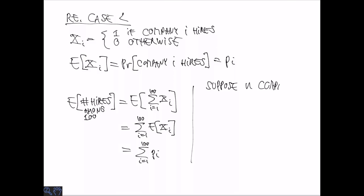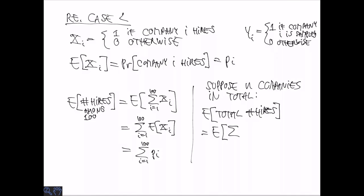What about the general population? So suppose we have n companies and the 100 are randomly sampled. The expected total number of hires can be expressed again in terms of another random variable, yi, where yi is 1 if the company is sampled and 0 otherwise. So then we can simply express this sum over all companies as the sum of probabilities that Xi hires and is sampled divided by the probability that i is sampled.